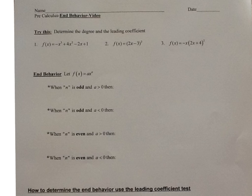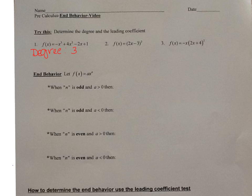Let's take a look at the first one. We have f(x) = -x³ + 4x² - 2x + 1. This is in simplified form. My degree is 3 because that's the largest exponent, and my leading coefficient is the number in front of x³, which is negative 1.